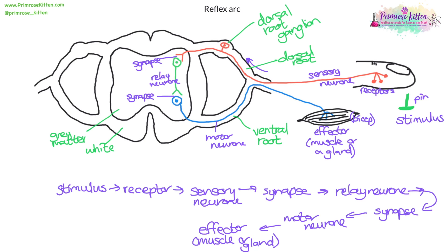All of these parts of gray matter lead up to the brain. The spinal cord here is part of the central nervous system. The parts of the motor neuron and sensory neuron that are outside of the spinal cord make up your peripheral nervous system, your PNS. So your central nervous system is the brain and spinal cord, and the PNS is everything else.